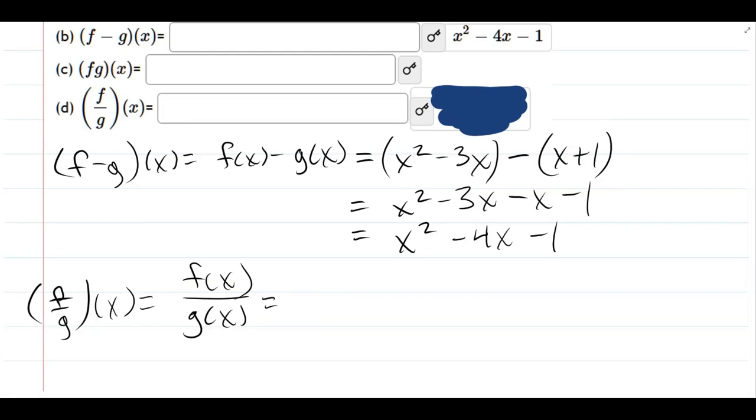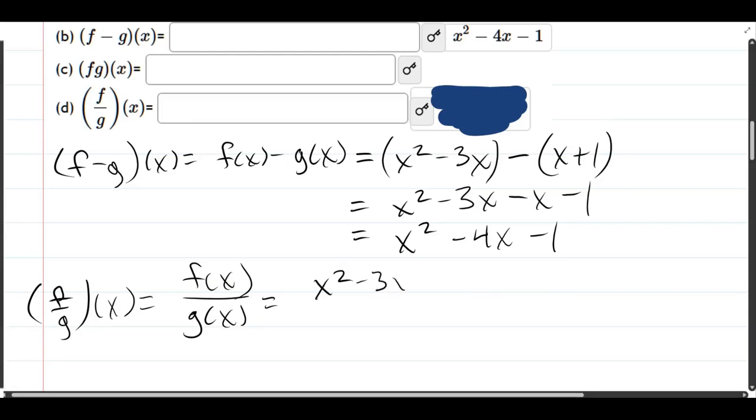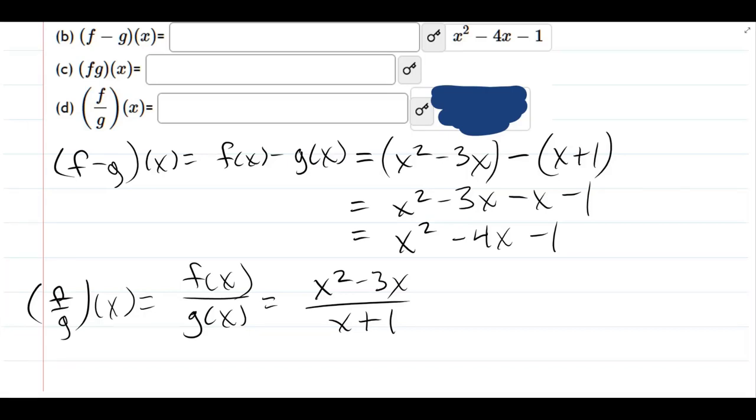So f is x squared minus 3x. g is x plus 1. You could factor an x out of the numerator, but it's not going to cancel anything in the denominator. So I think I'm going to leave it just like this.